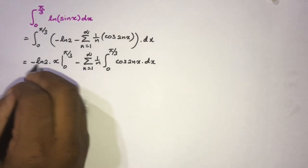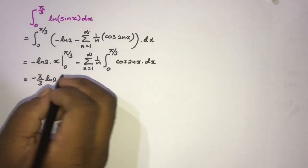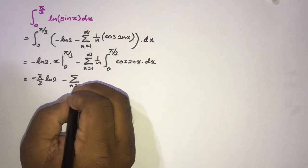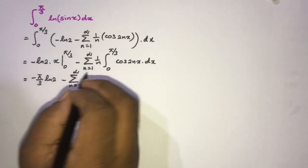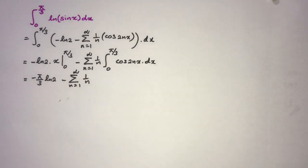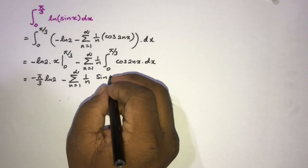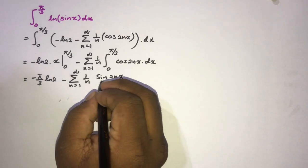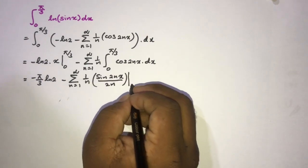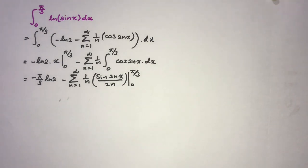Plugging in the limits for the first part gives minus (π/3) ln(2). For the second part, we integrate cos(2nx) to get sin(2nx)/(2n), evaluated from 0 to π/3.